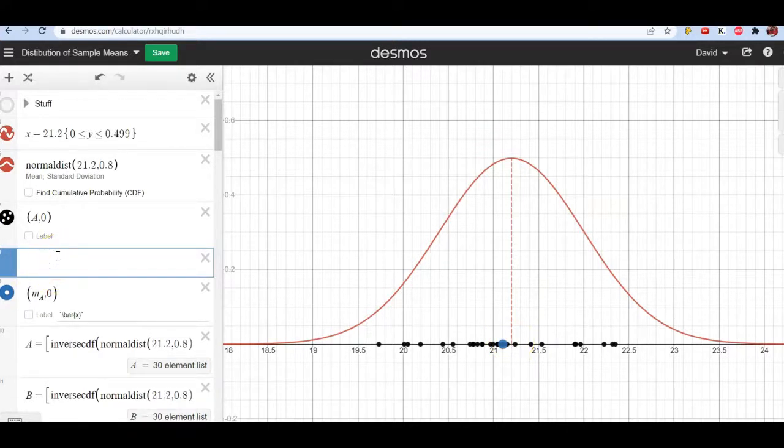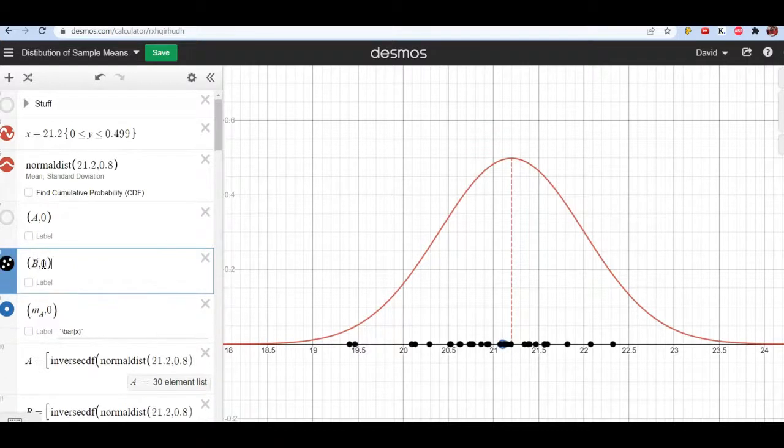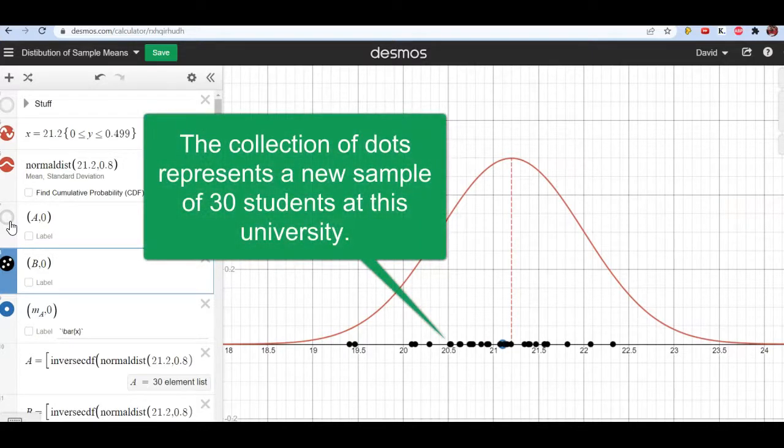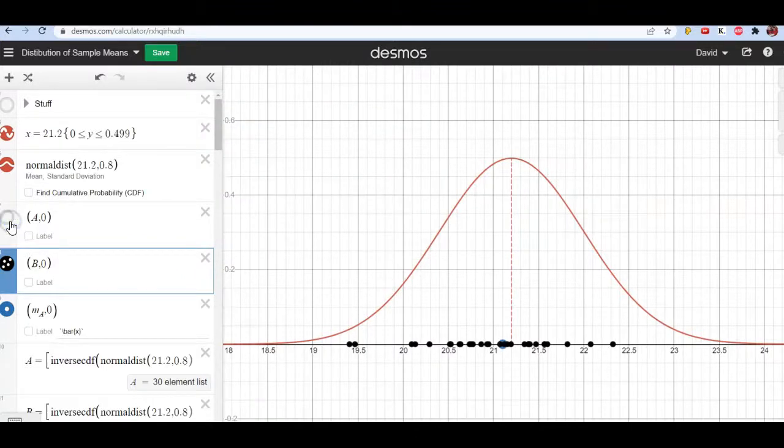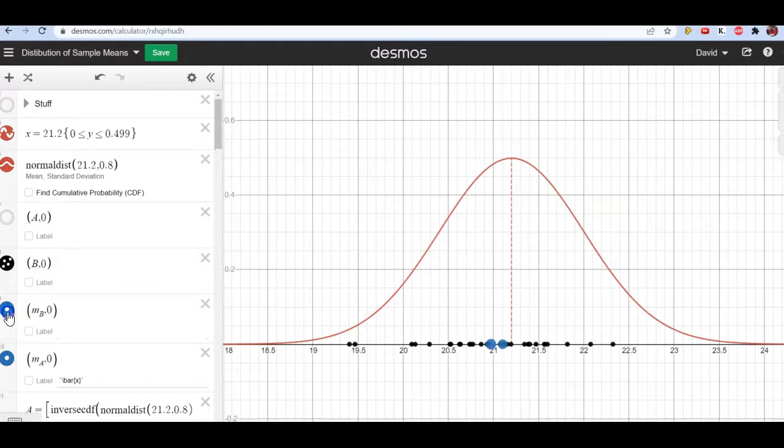Now right below that, I'm going to turn off A, and I'm going to add capital B. And we can see it's a different data set. The values are different. It's a random sample. The values that we see in the random sample are different than the values we got in the other random sample. It should be expected that we're not going to get the same values from one random sample to the next. And because of that, we're not going to get the same mean as we get from one sample to the next.